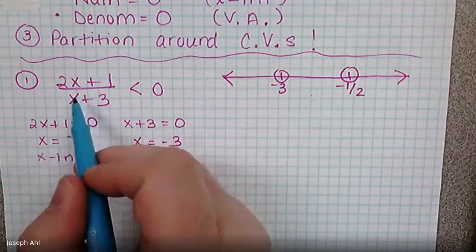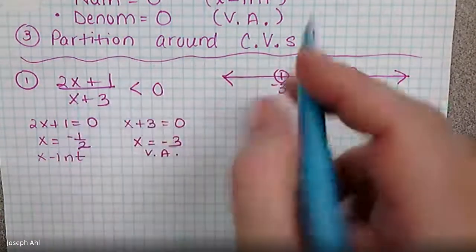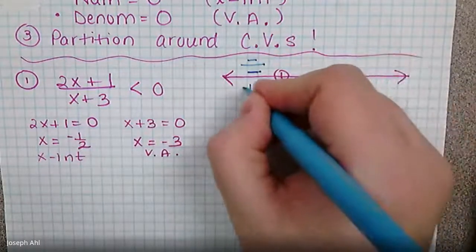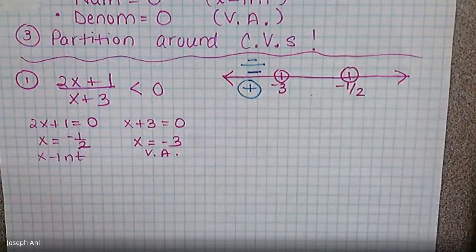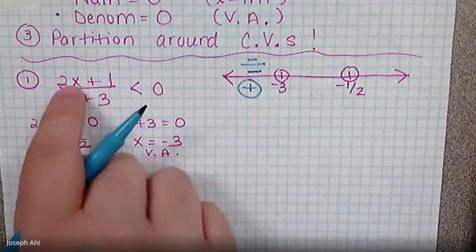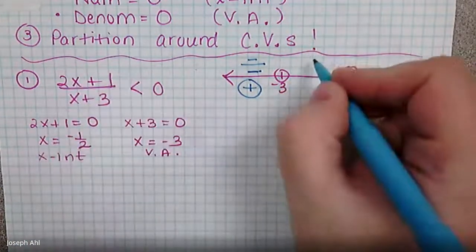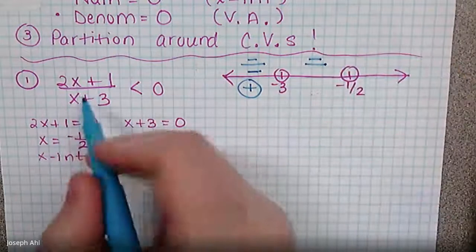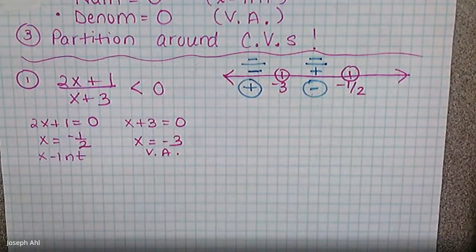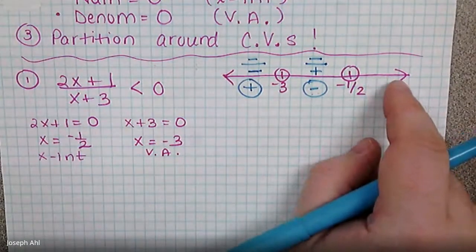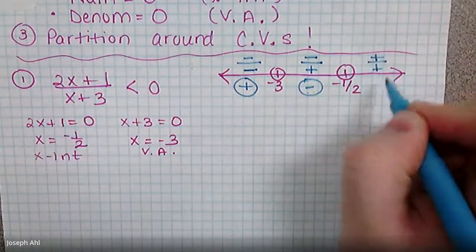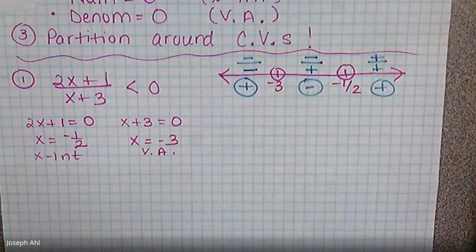Plugging in negative four: two times negative four plus one is negative, and negative four plus three is negative — negative divided by negative is positive. In between negative three and negative one-half, test negative one: two times negative one plus one is still negative, negative one plus three is positive — negative divided by positive is negative. To the right of negative one-half, test zero: two times zero plus one is positive, and zero plus three is positive — making that last region altogether positive.